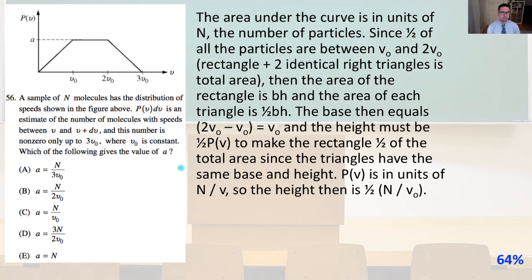Number 56. A sample of N molecules has the distribution of speeds shown in the figure above. P of v dv is an estimate of the number of molecules of speeds between v and v plus dv, and this number is non-zero, only up to 3v_0, where v_0 is constant. Which of the following gives the value of a? So the area under the curve is in units of N, which is the number of particles.